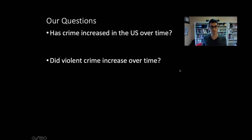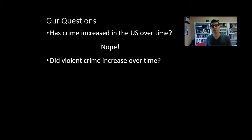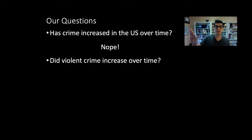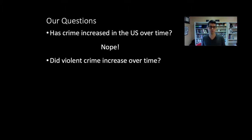We've answered the question of whether crime increased in the US over time. Our line chart showed us that no, it didn't—particularly when we look at the crime rate, which adjusts for the fact that the US population has grown so much, creating more possibilities for crimes. Crime increased from the 60s up until about the 1980s and 90s, and then we've had a pretty steady decrease after that, giving us some additional context for those New York Times and Washington Post stories.